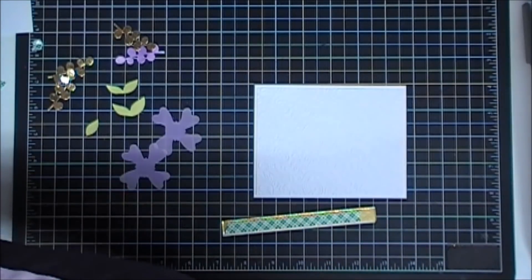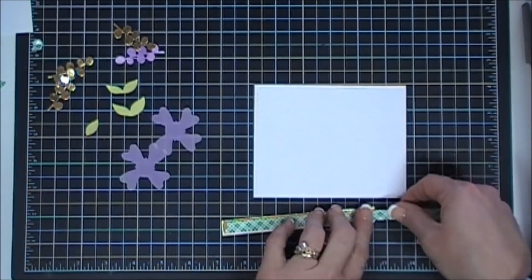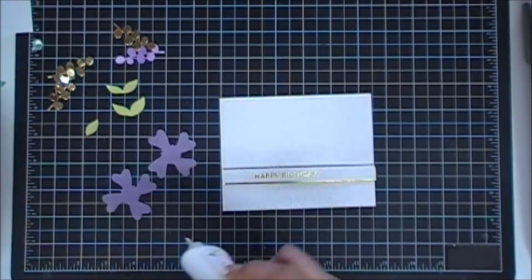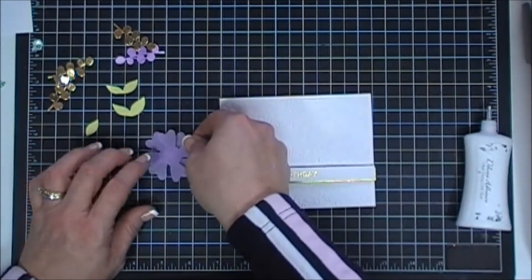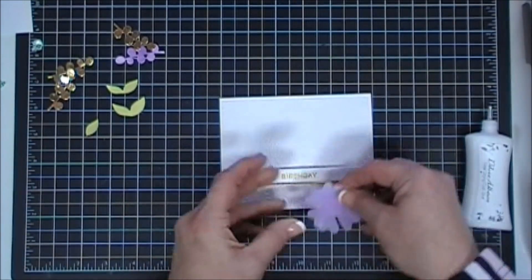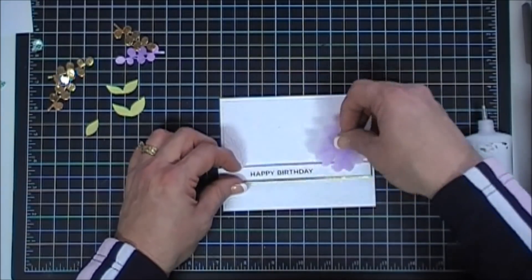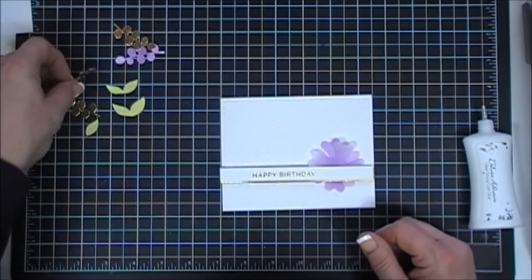I'm not going to remove the release paper just yet. I'm going to figure out my placement. I'm going to glue both of my vellum flowers together. Originally I was going to go on top, but I thought if we pushed them underneath, I think it would look a lot nicer.